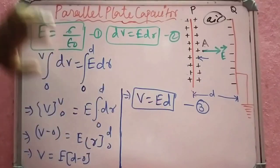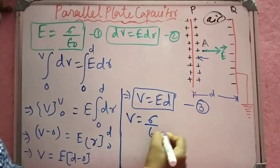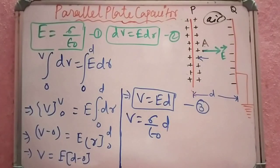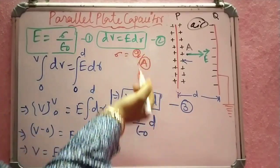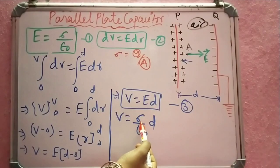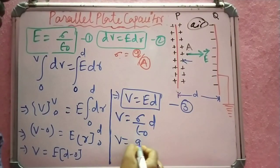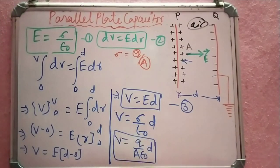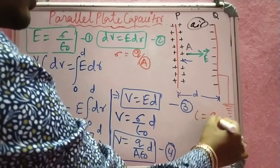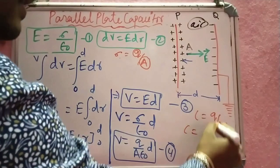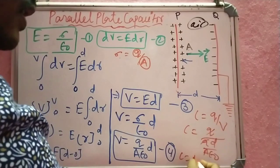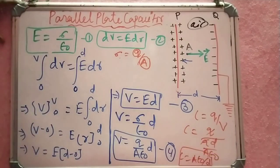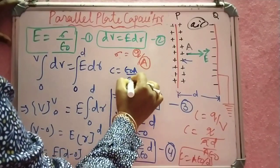From equation 3, V equals sigma by ε₀ into d, since E equals sigma by ε₀. The surface charge density sigma equals Q by A (charge Q divided by area A). Substituting, V equals Q d by A ε₀, which is equation 4. Since C equals Q by V, we get C equals Q divided by (Q d / A ε₀), so C equals ε₀ A by d.